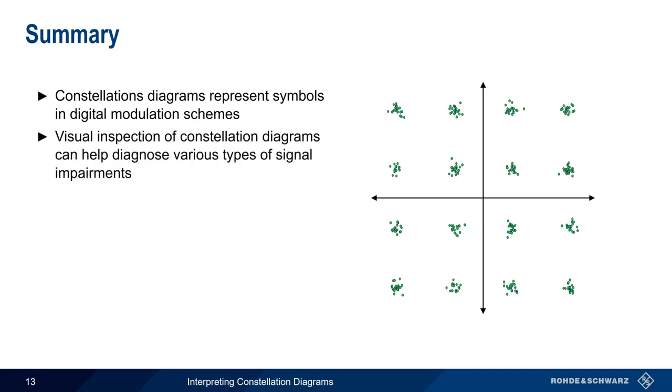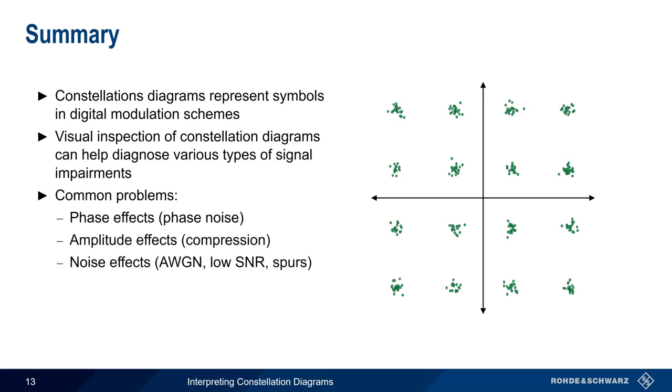Visual inspection of constellation diagrams can often be very helpful in detecting and diagnosing the nature of impairments in a digital transmission system. There are several common problems that can be diagnosed in this way. These include phase noise and amplitude effects, such as compression. The presence of both wideband and narrowband noise, or a low signal-to-noise ratio, are also easily seen in a constellation diagram. And changes in the geometry of the constellation usually indicate IQ modulator or demodulator imperfections, such as gain or quadrature imbalance.